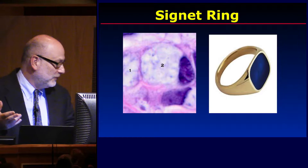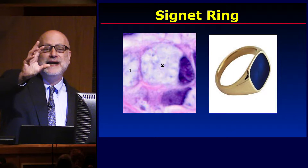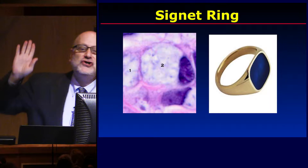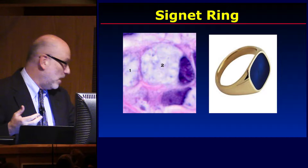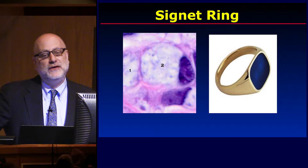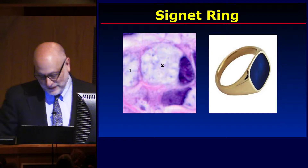A pathologist looked under the microscope and took a signet ring, turned it so you're looking at it in profile. The signet represented the nucleus that got pushed to the side — in a normal cell the nucleus is in the center, and it's being pushed aside because of a large volume of intracellular mucin displacing the nucleus. This is how a pathologist makes a diagnosis of a signet cell mucinous adenocarcinoma.